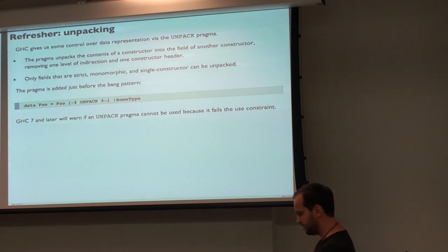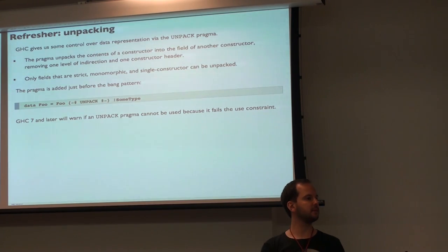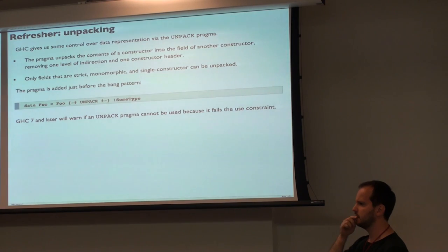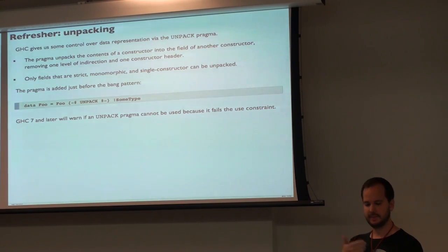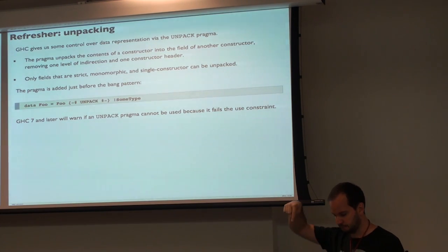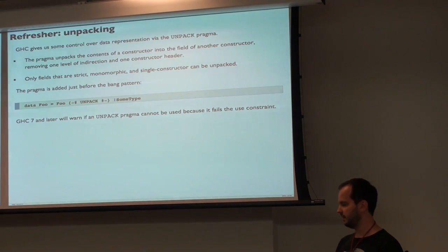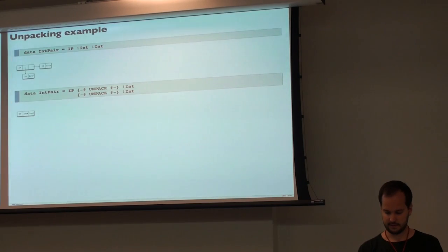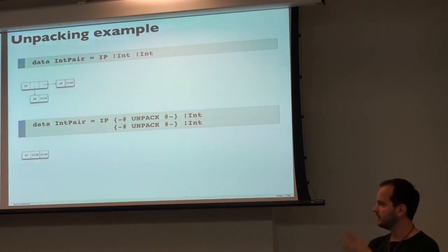UNPACK has some constraints. The type needs to be known — you can't say UNPACK on a type variable A because we don't know the structure of A. So things need to be monomorphic. They need to be single-constructor, because if a type has several constructors with fields of different sizes, it's hard to know how to unpack it. And the field needs to be strict, because if you're going to unpack an Int into the constructor, there's no space for a thunk pointer anymore. Therefore the field must be strict.